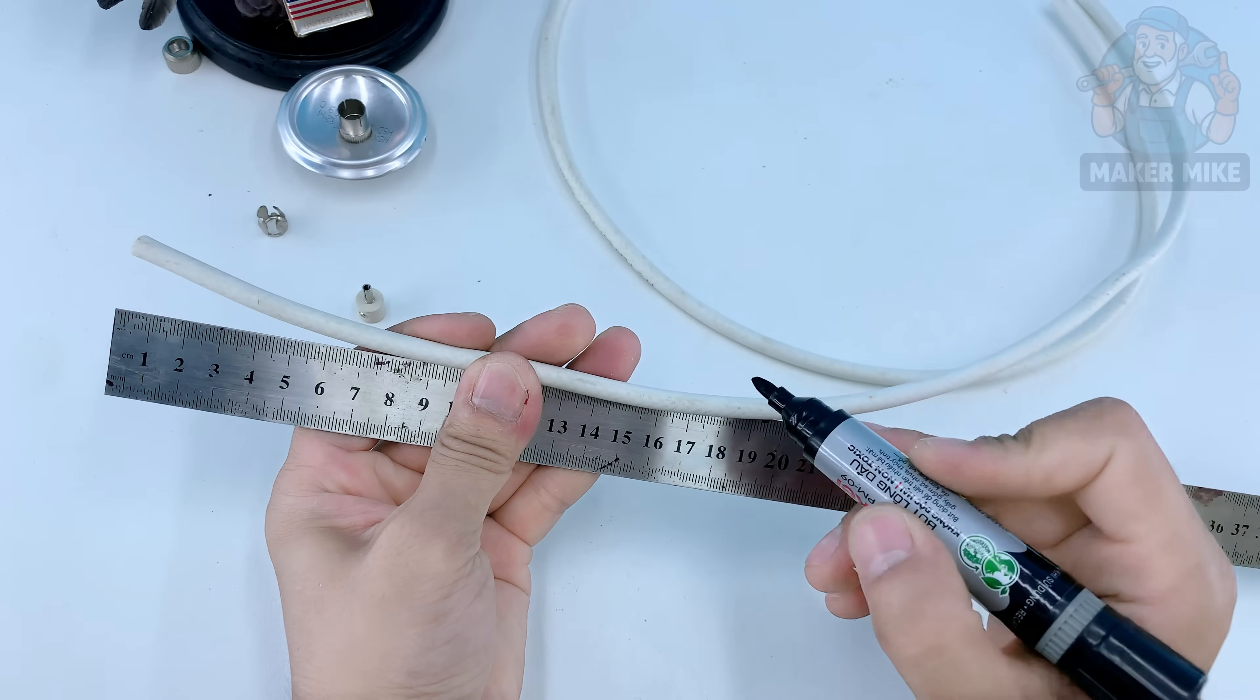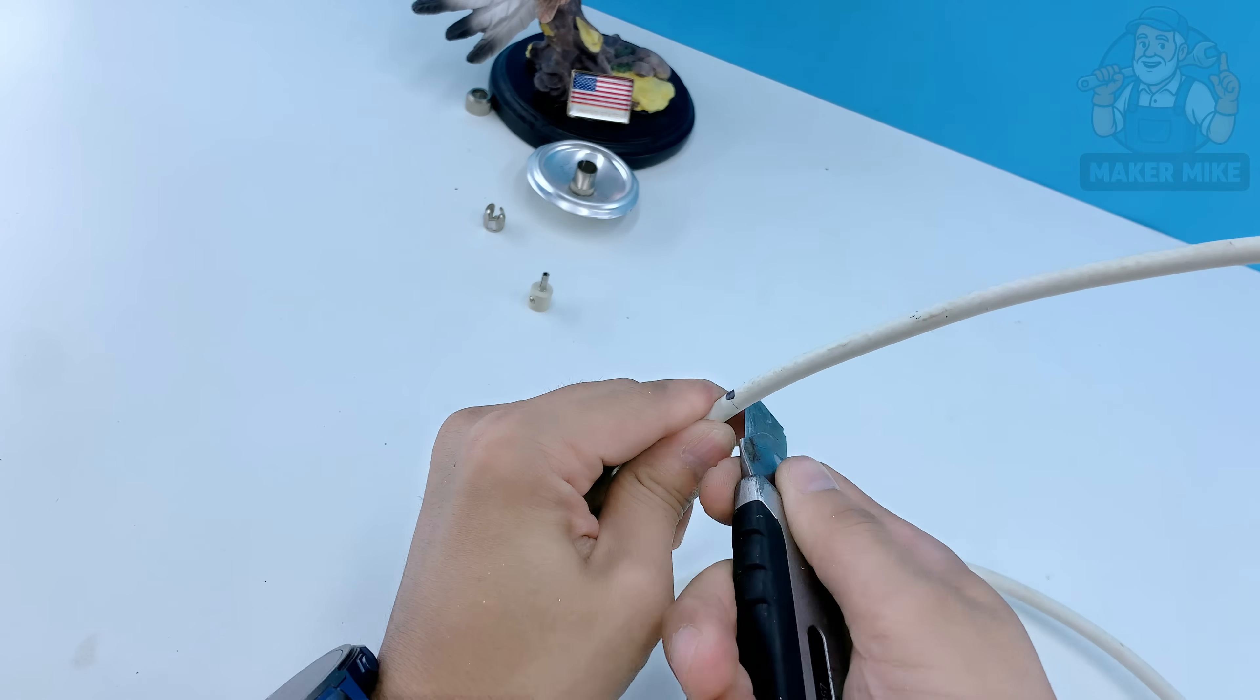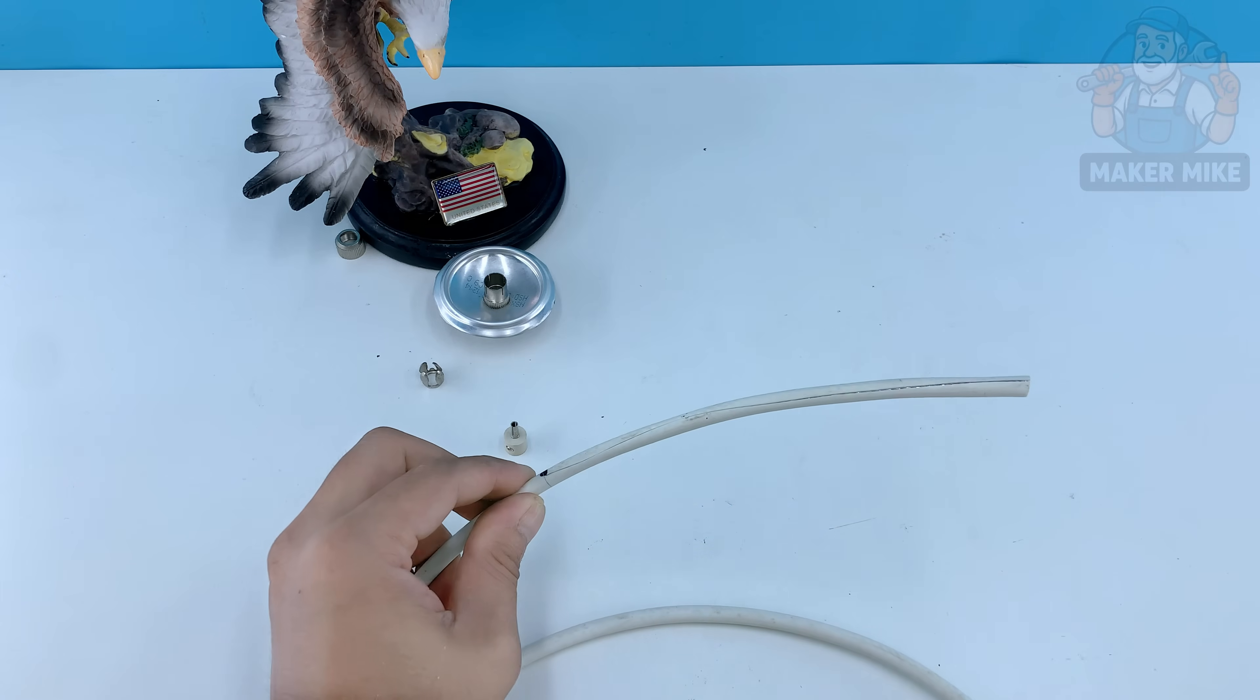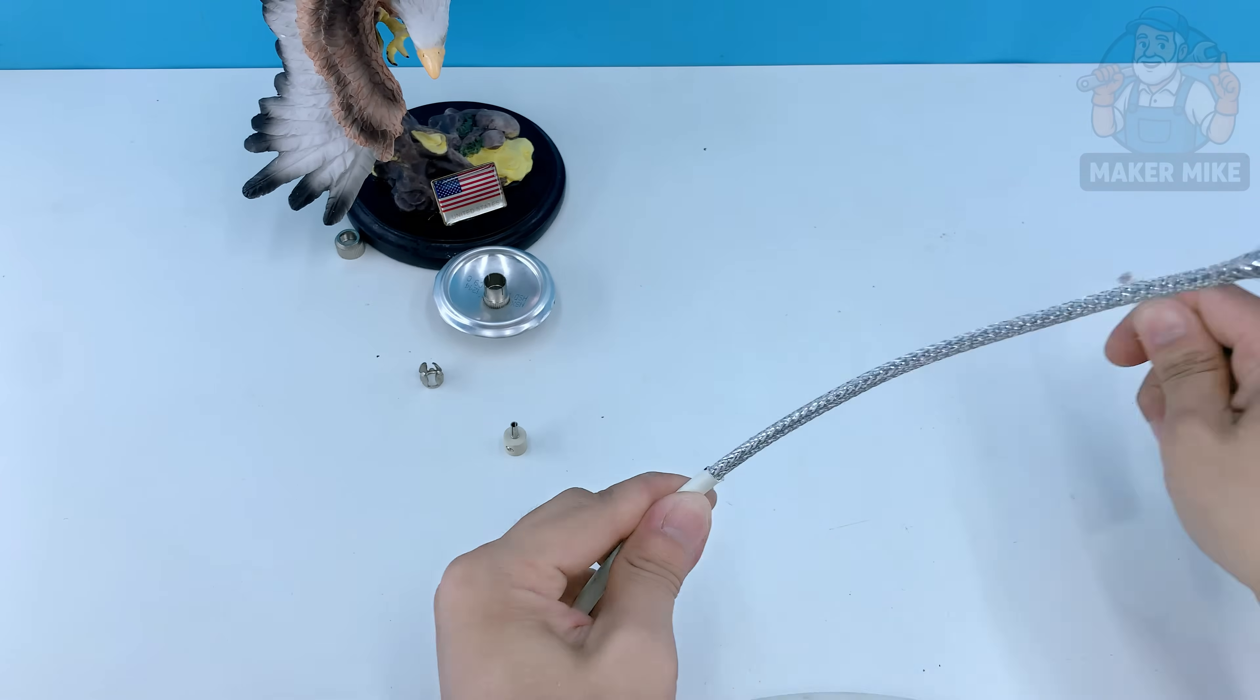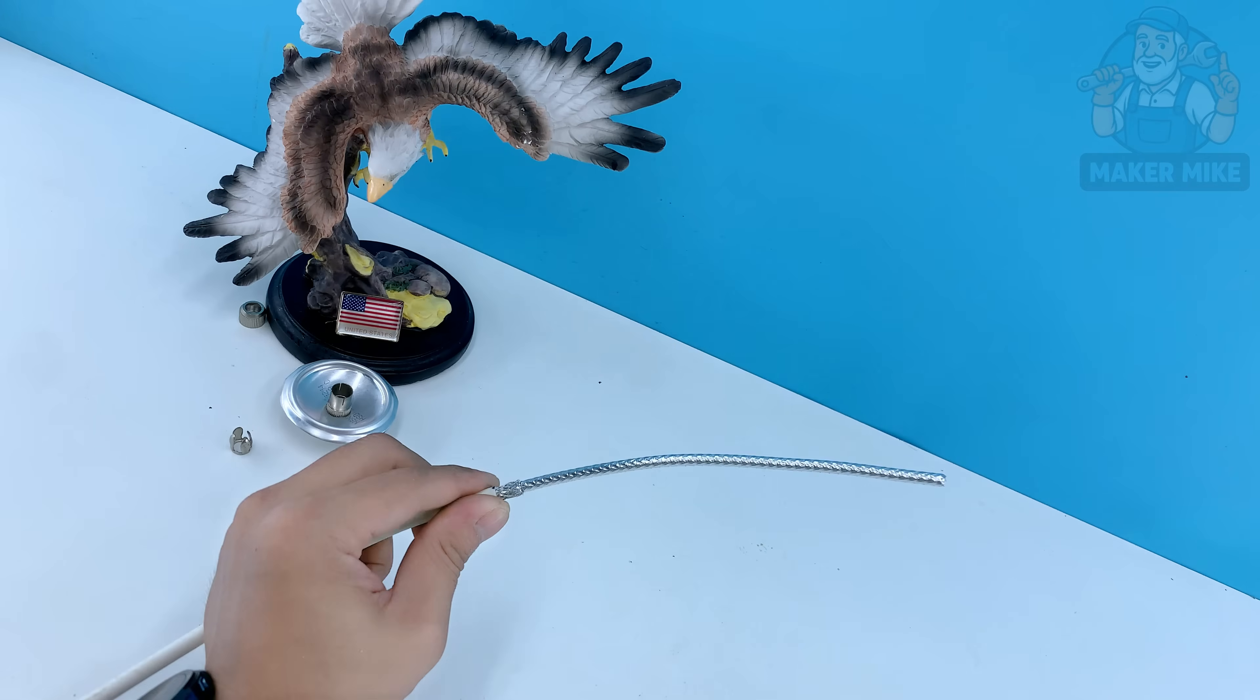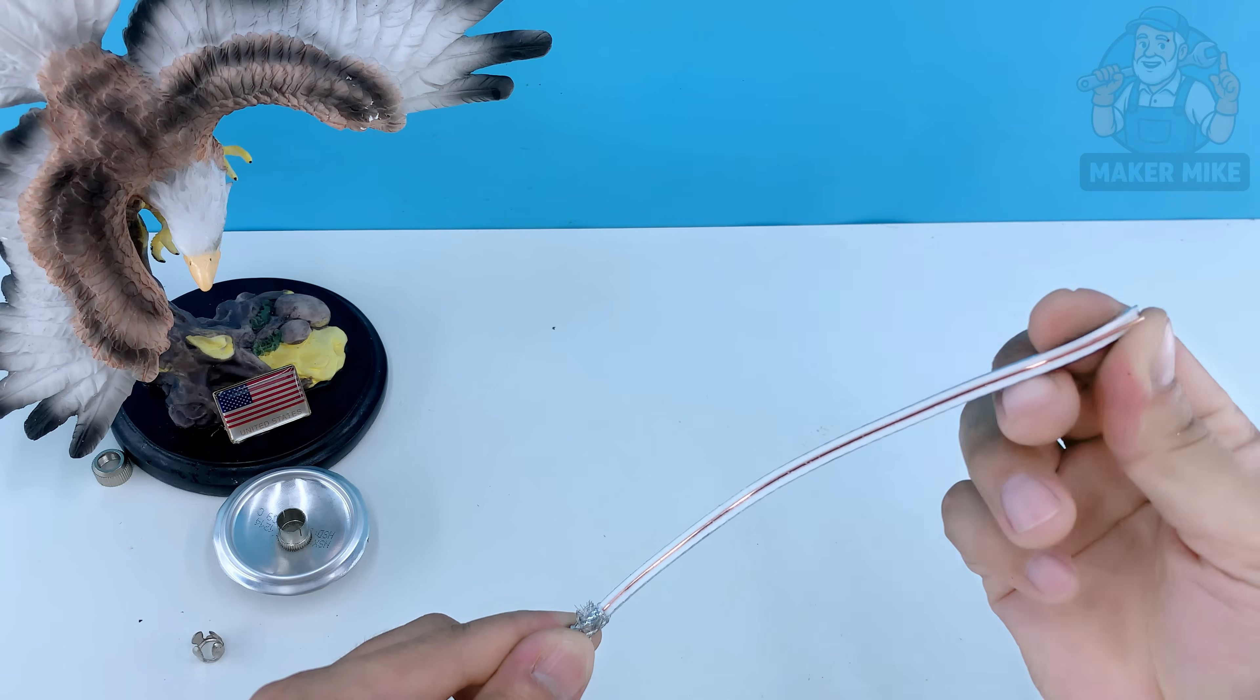This is where the magic happens. You'll need a piece of coaxial cable, the kind used for TV connections. Strip away the outer plastic jacket carefully with a utility knife. Underneath you'll see a braided shield that's the grounding layer. Gently pull that back and in the very center you'll find a single solid copper wire. That's our main signal conductor.